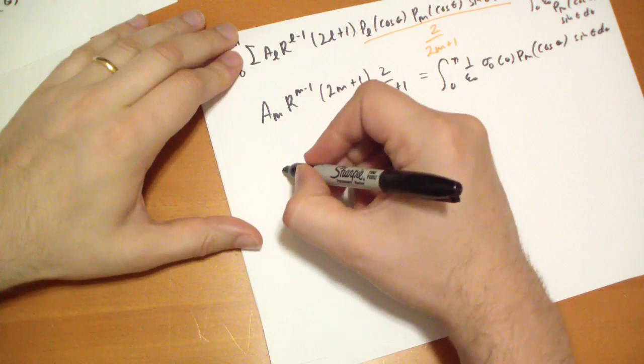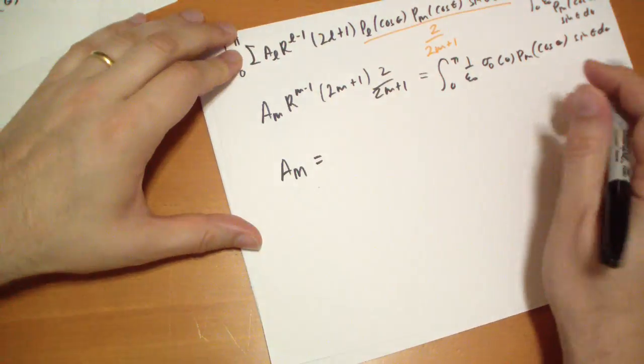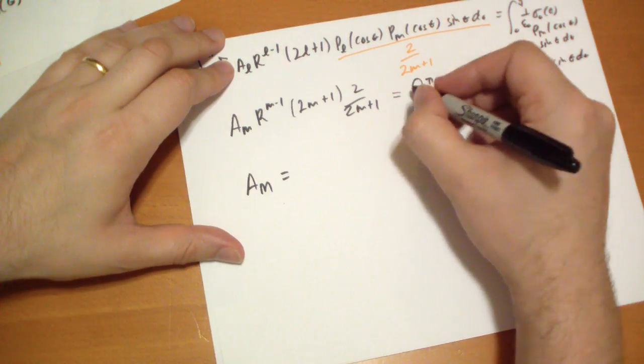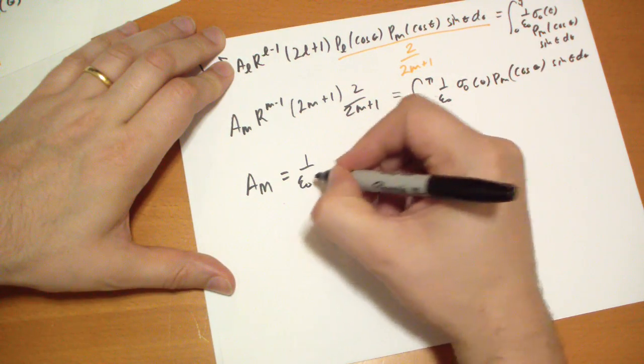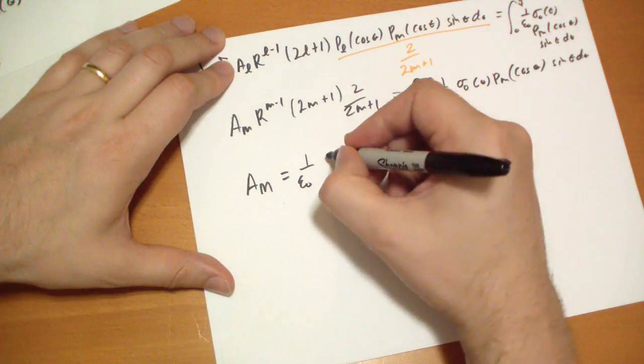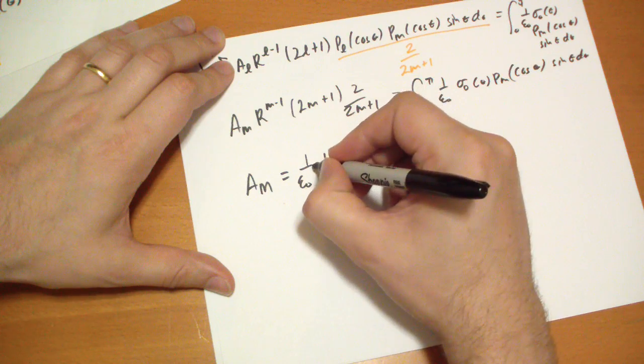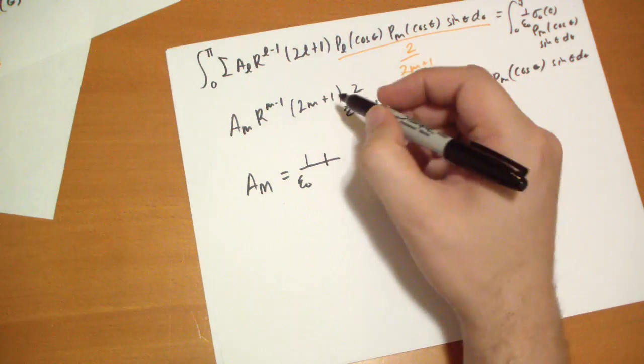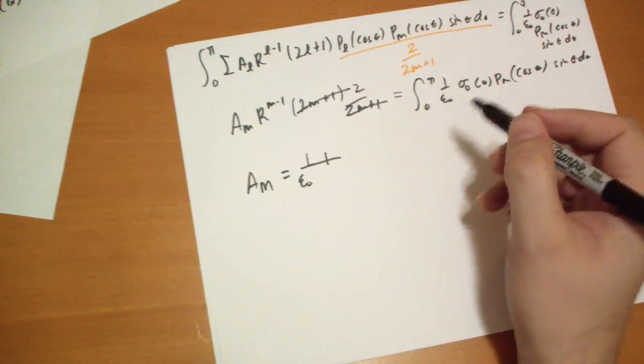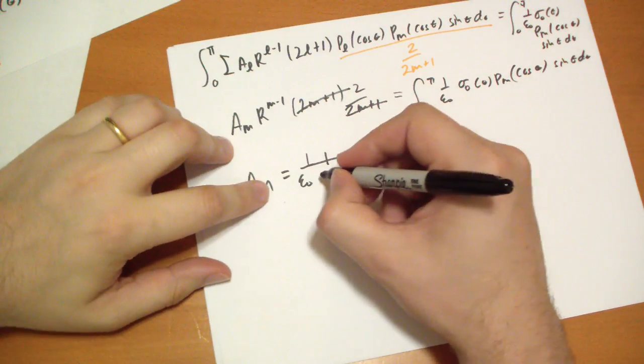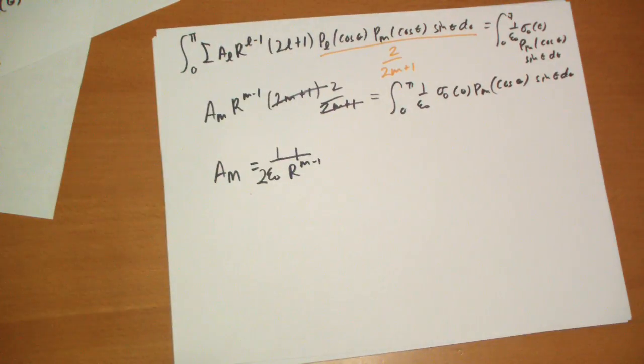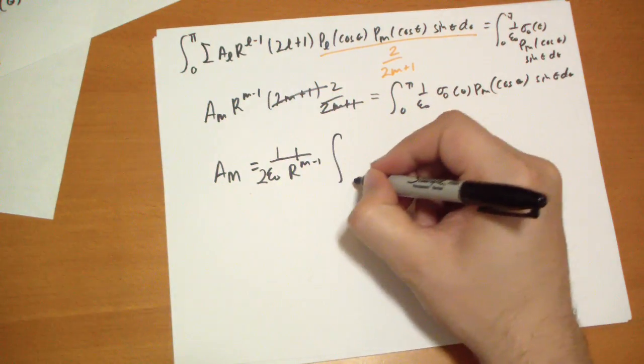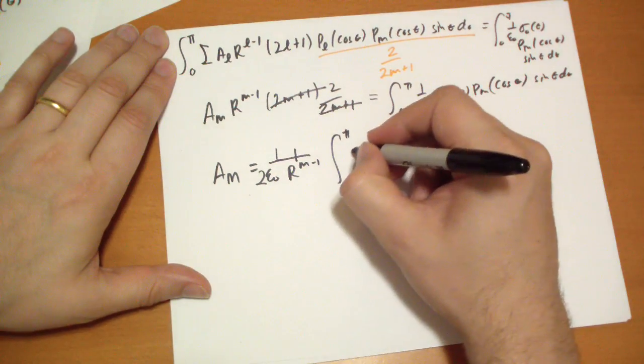So our A_Ms are going to be given by, we can take one over epsilon-naught out. So we have one over epsilon-naught, R to the M minus one. We have 2M+1 and 2M+1, these cancel. So we have a two on the bottom, 2*epsilon-naught*R^(M-1), times the integral of this stuff.